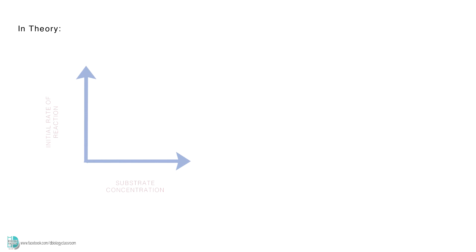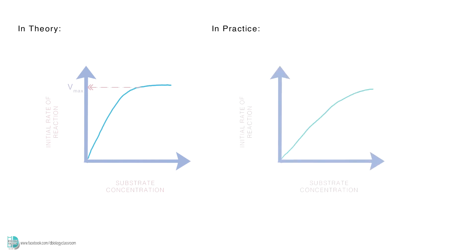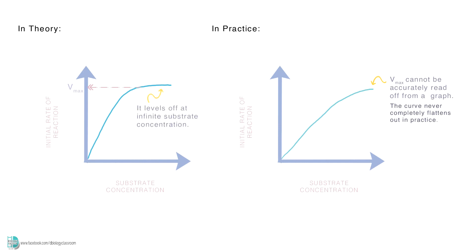Theoretically, when you repeat an experiment by using different substrate concentrations and plot the graph of the initial rate of reaction against each of the substrate concentrations, you would be able to find a Vmax and hence the Km of an enzyme. However, in reality, Vmax cannot be accurately read off from a velocity against substrate concentration graph, because the curve never completely flattens out in practice. In theory, it does so at infinite substrate concentration, but in reality, it is not possible to measure this concentration.